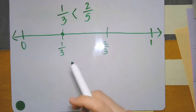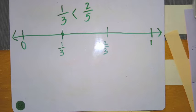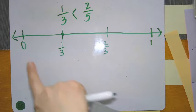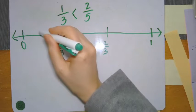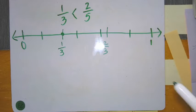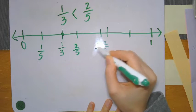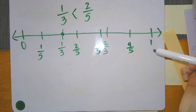Then I'm going to write the tick marks for fifths. How many tick marks am I going to have for my fifths? The denominator is five, so four tick marks. I'm going to do the same thing with my finger, visually seeing where my fifths would go. One-fifth, two-fifths, three-fifths, four-fifths. And then our last one would be five-fifths, also along with our three-thirds.